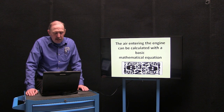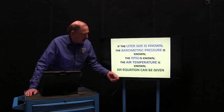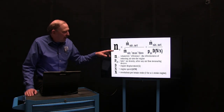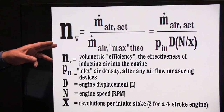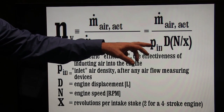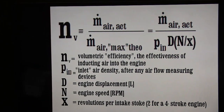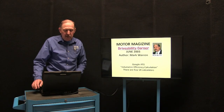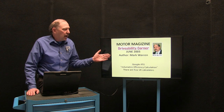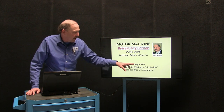The air in the engine can be calculated with a basic mathematical equation. I need to know the liter size, the barometric pressure, the RPM, and the air temperature, and we can give an equation that can approximate the air flowing. The volumetric efficiency equation: NV is the volumetric efficiency, comparing actual air max to theoretical air max, considering air density, displacement, engine speed, and revolutions divided by number of strokes. One of our instructors at Worldpack wrote about this system and doing VE back in June 2003. One place you can go to get a volumetric efficiency calculator is ATG — there are others if you Google it.